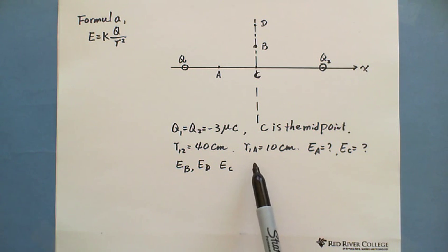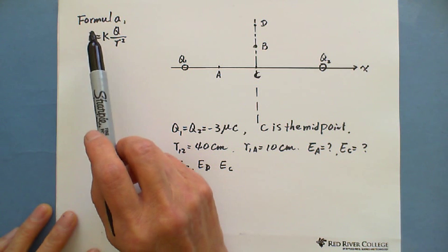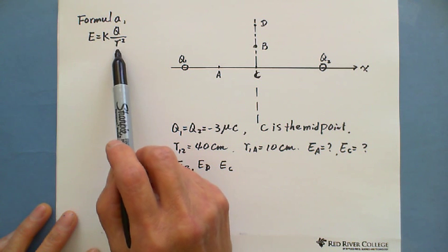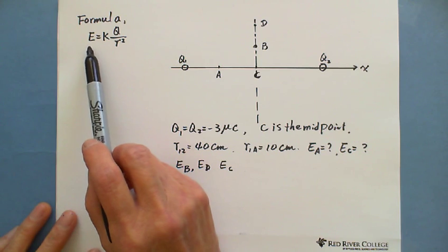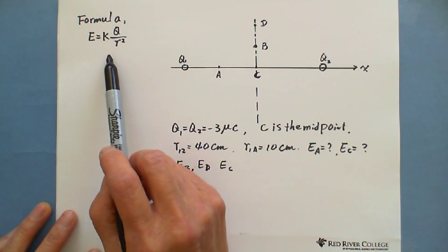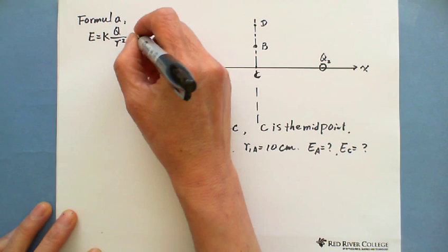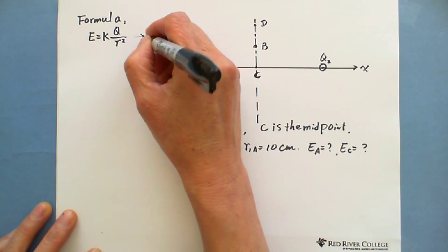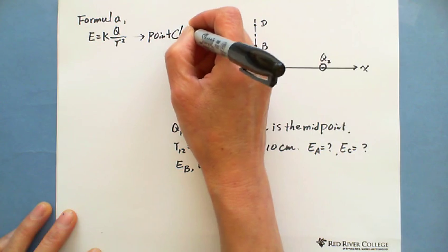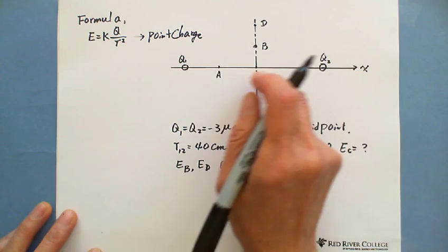First of all, let's review the formula. The formula E = KQ/R² is specifically for solving electric field strength for a point charge, just like in this question.